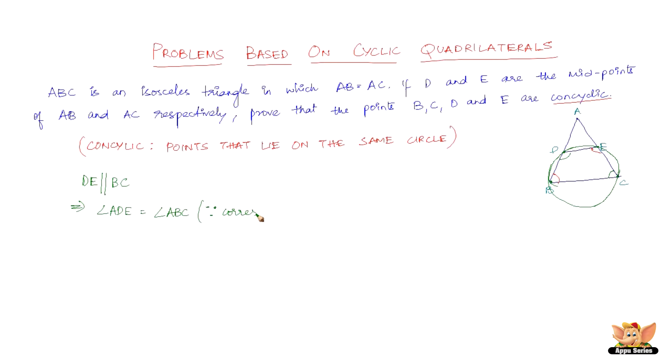this is a very basic property in triangles. Let me write the reason here. They are equal because angle ADE equals angle ABC as corresponding angles, since line DE is parallel to BC.